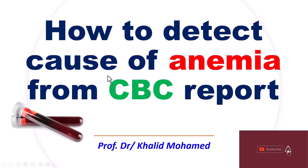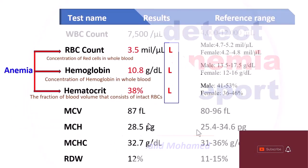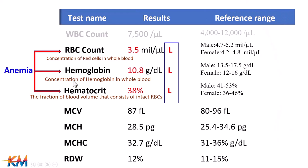How to identify anemia cause from a complete blood count report. A decrease in the three parameters called anemia indices, or one of them, indicates presence of anemia. These parameters are red blood cells, hemoglobin concentration, and hematocrit percent. After you detect presence of anemia, finding the cause is necessary to determine the best course of treatment.